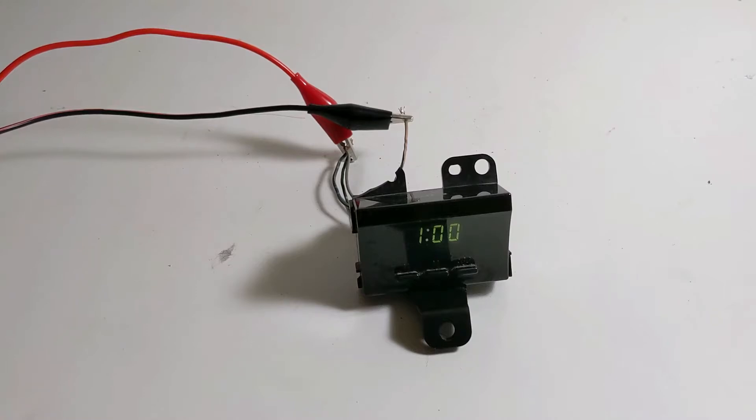Hey YouTube, today I'm going to be showing you how to test your clock in your 1999 3rd gen 4Runner.